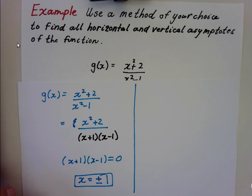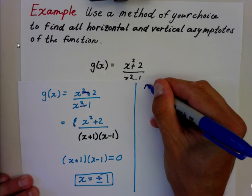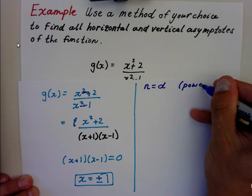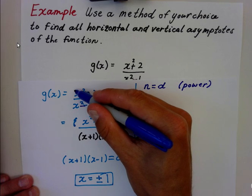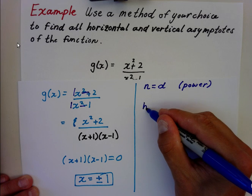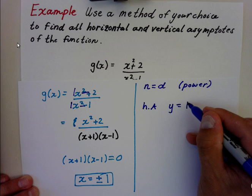Horizontal asymptote, and this one's a little different. If we look, same power here and here. The numerator equals denominator in power. So by definition, we divide the leading coefficients. The leading coefficients are 1 and 1. So the horizontal asymptote is equal to 1, 1 divided by 1 here.